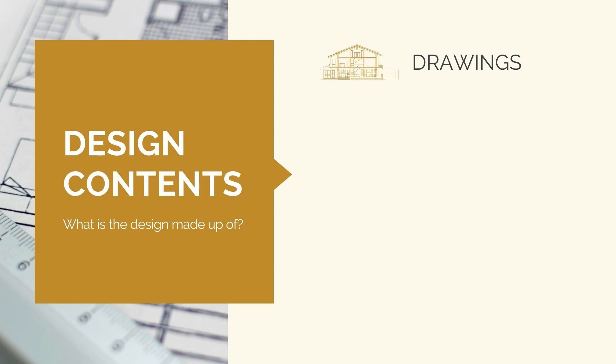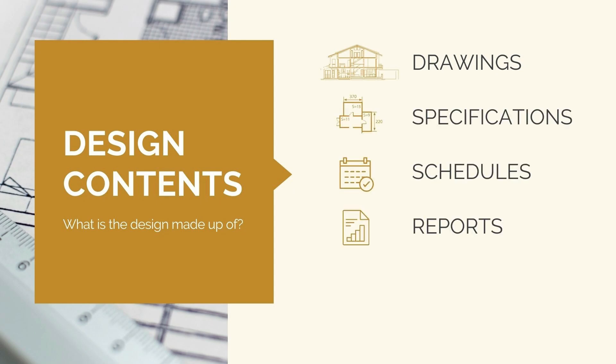Let's talk about how to read and interpret engineering drawings by looking at the typical structure of an engineering design and the types of design documentation you'll be using. These include drawings, specifications, schedules, reports, and if you're working on a modern construction project, digital models — things like BIM and 3D models of a structure.